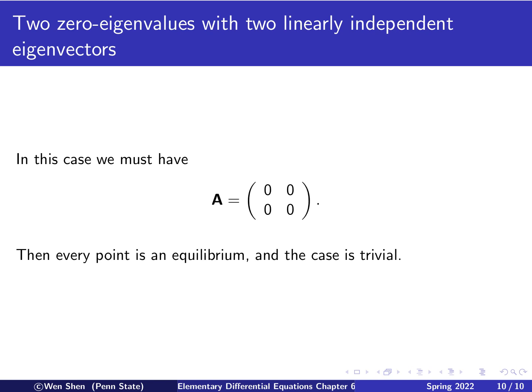Let's look at the final case, which actually isn't much to talk about. Now, we have two zero eigenvalues with two linearly independent eigenvectors. And then, in this case, the only possible matrix is the zero matrix. And that means if you write out your equation, you have x1 prime is zero, x2 prime is zero, and then nothing moves. That is, every point in the x1, x2 plane is an equilibrium, and it's a trivial case.